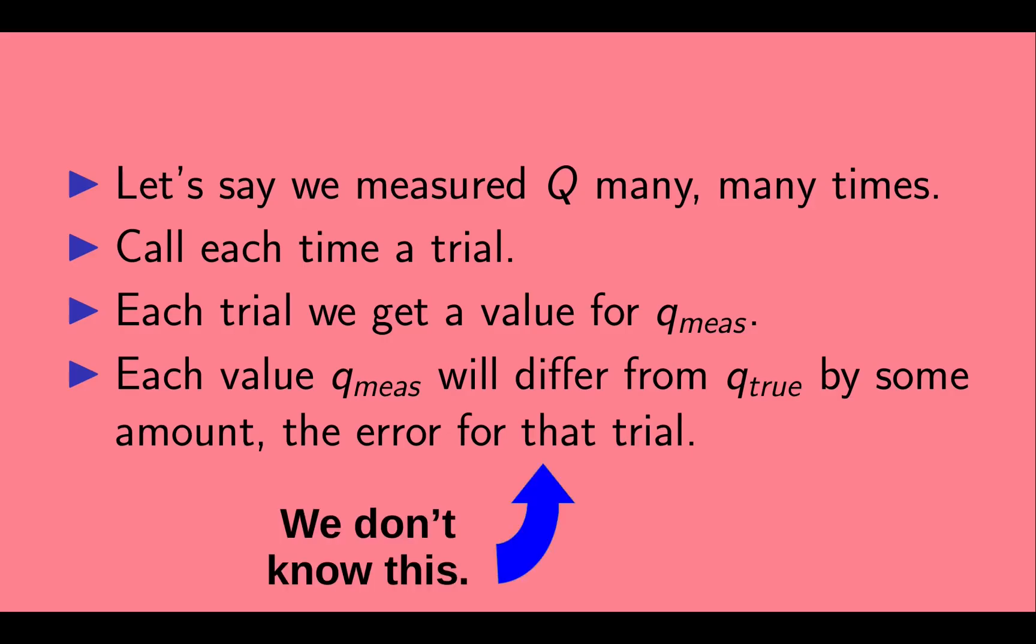We don't know the error for a given trial. We know the measured value, as that is the result of our experiment. But we can't know the error as well, as that would imply that we know the true value, which we definitely do not know.